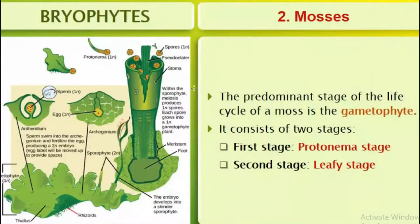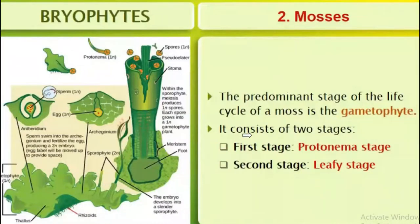The second type of bryophyte is mosses. The predominant stage of the life cycle of a moss is the gametophyte. Among mosses, the gametophyte is somewhat differentiated, unlike liverworts. It consists of two stages: the first stage is the protonema stage and the second stage is the leafy stage.